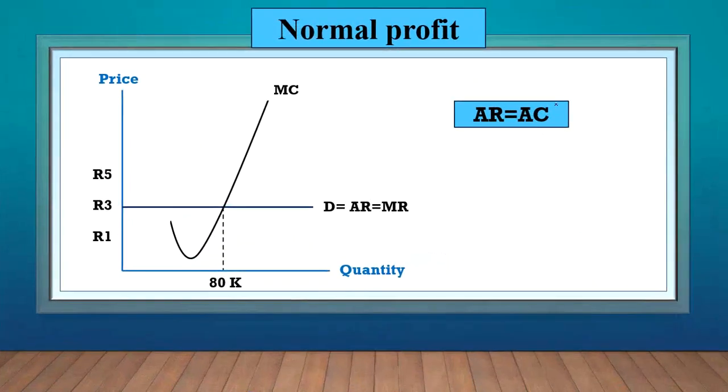Now the normal profit is easy. Normal profit is where the A's are equal. So the minimum point of the AC should touch the AR. So we will have a normal profit in this situation. So our AC just touches our AR. So we've got a normal profit.